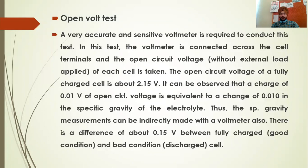A change of 0.01 volt in open circuit voltage is equivalent to a change of 0.010 in the specific gravity of the electrolyte. So if we do not have a hydrometer, we can measure the open circuit voltage instead. A 0.01 volt change corresponds to a 0.010 specific gravity change, so a reading of 1210 can be derived from the voltage reading. Thus, specific gravity measurement can be indirectly made with the voltmeter as well.